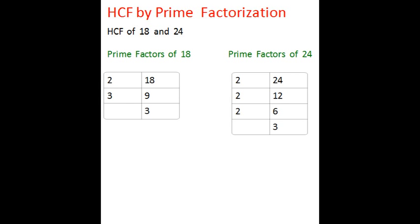The prime factors for 18 are, let's use the prime factorization method. Divide by 2, the smallest prime number, answer is 9. 9 is not divisible by 2, so the next prime number is 3. And the answer is 3 which is a prime number which cannot be divided further.